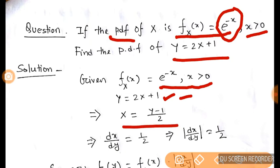Now we differentiate both sides with respect to Y and we get dX/dY = 1/2, which implies that the absolute value of dX/dY equals 1/2.